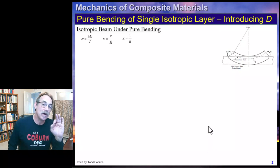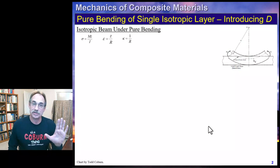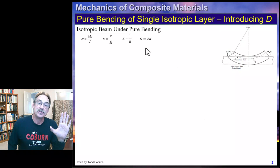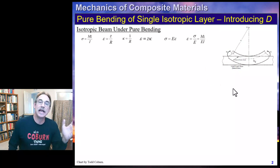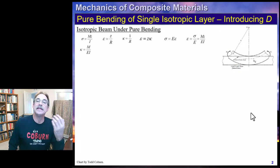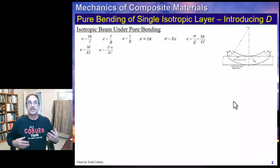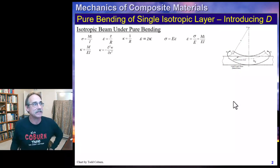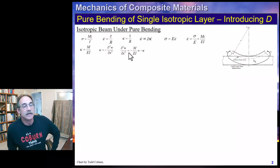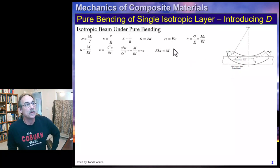We defined the curvature as 1 over r. So we have radius of curvature and curvature, which is a different parameter, 1 over r. We found that the strain could be written as that positional parameter times the curvature of the beam. We also applied Hooke's law, which allowed us to write a relation for the strain relative to Mz over EI.